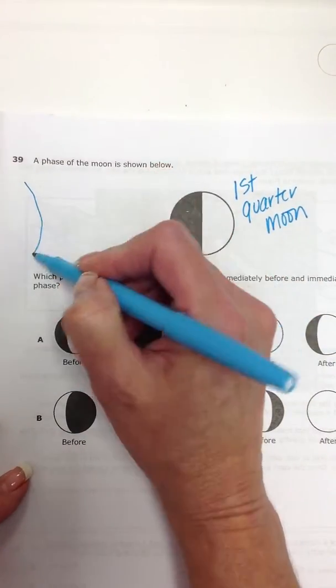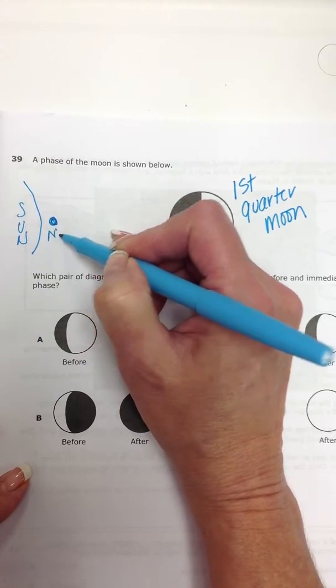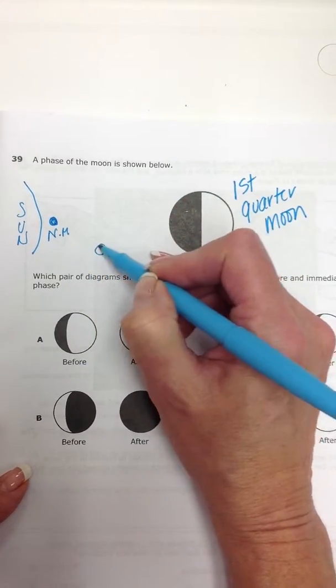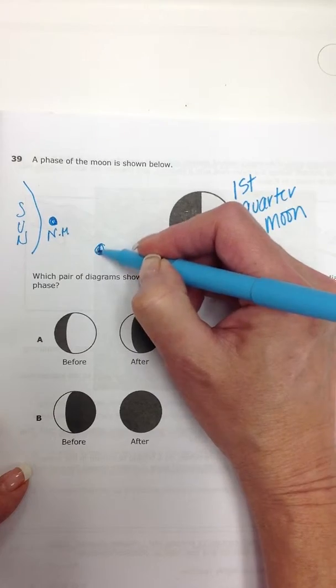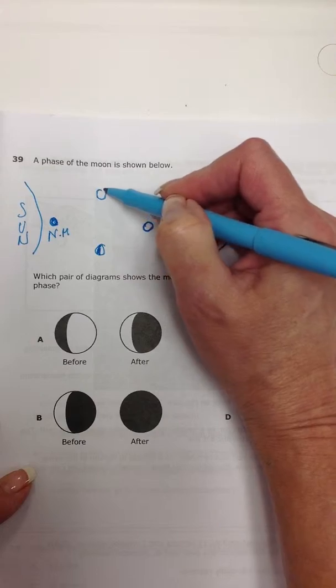to show here's the sun and here's our new moon, and then first quarter, full moon, third quarter.